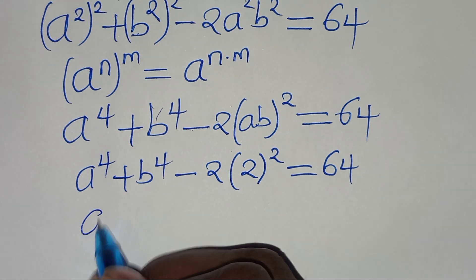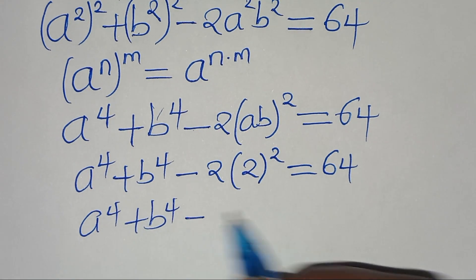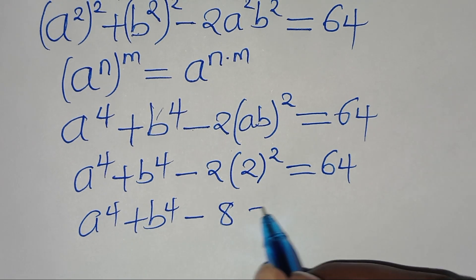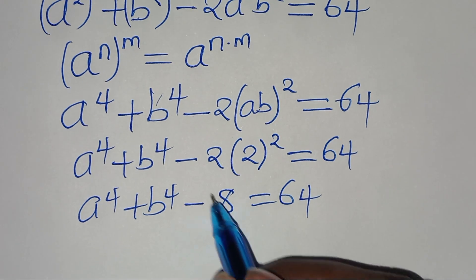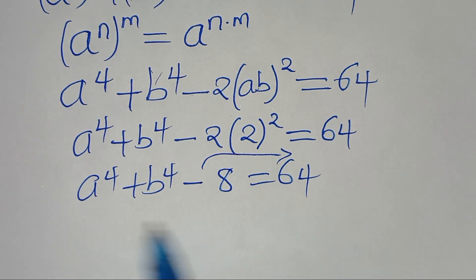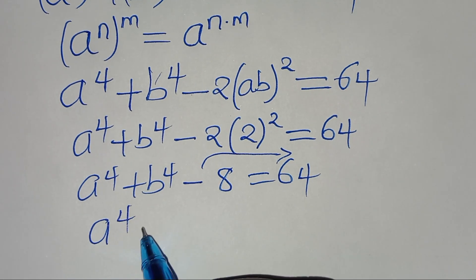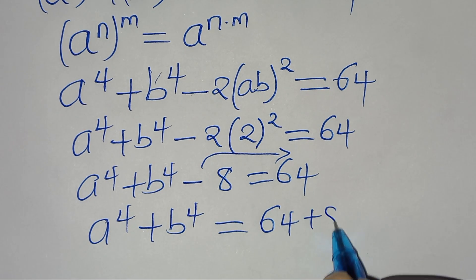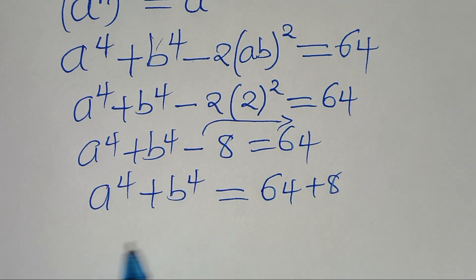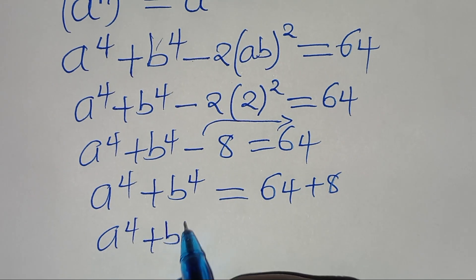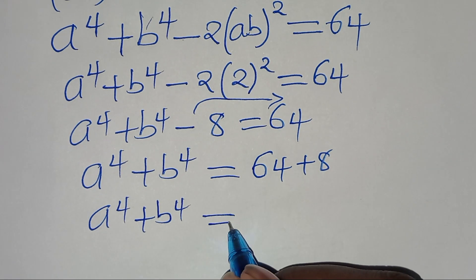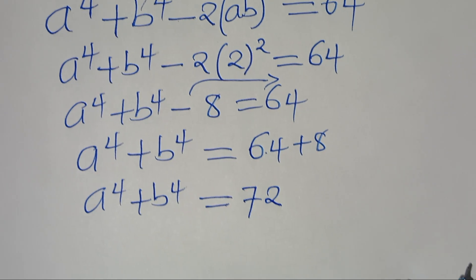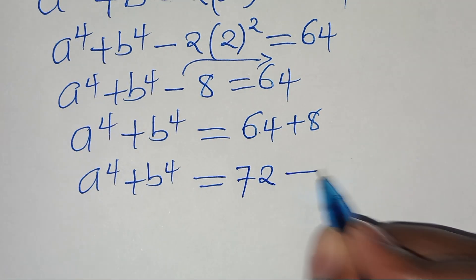So we have a to the power of 4 plus b to the power of 4 minus 2 squared, which is 4, times 2, which equals 8, and this equals 64. Taking minus 8 to the right-hand side, we have a to the power of 4 plus b to the power of 4 equals 64 plus 8, which equals 72. Let's call this equation 3.